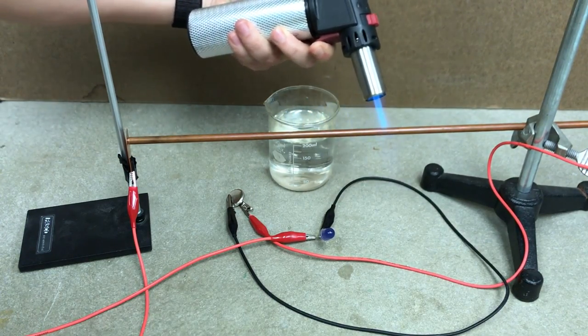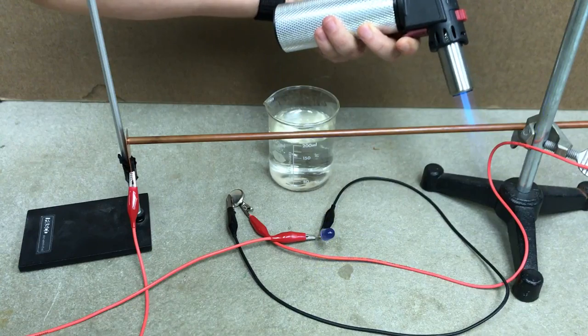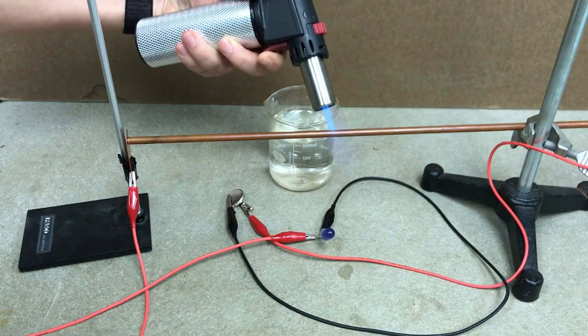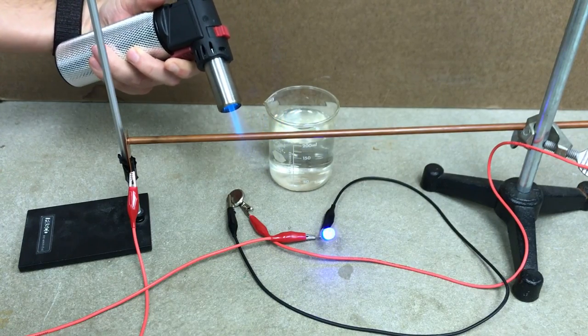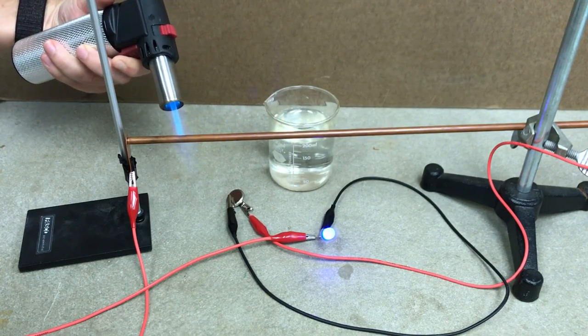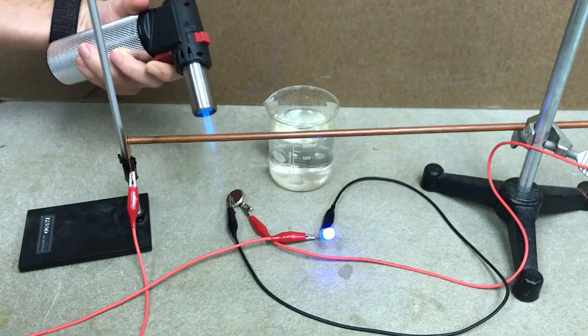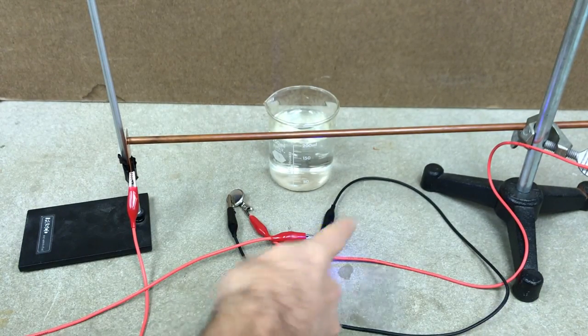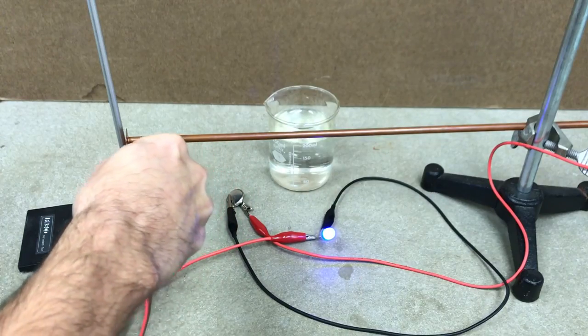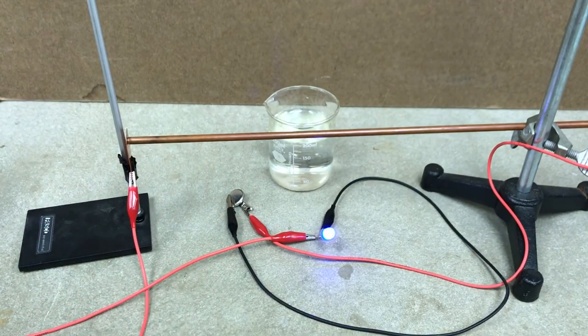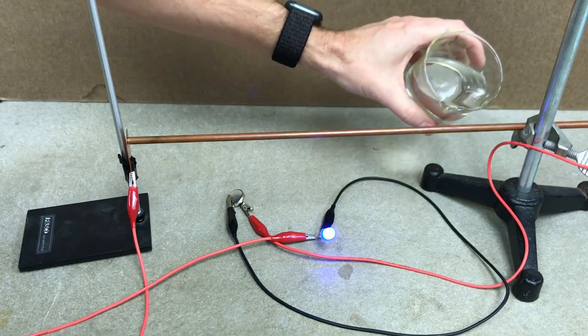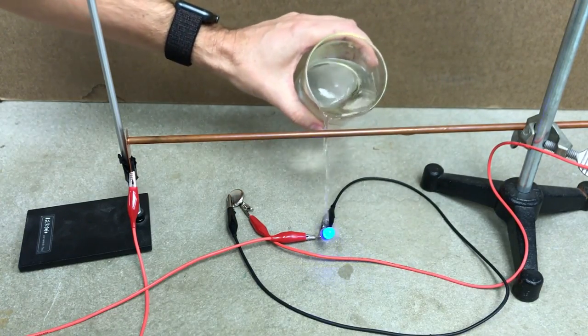Hopefully I won't burn anything. There. Check that out. So now the light's on because it expanded until it touched the copper and made a connection. If I pour a little bit of water on that and cool it off, it should turn off.